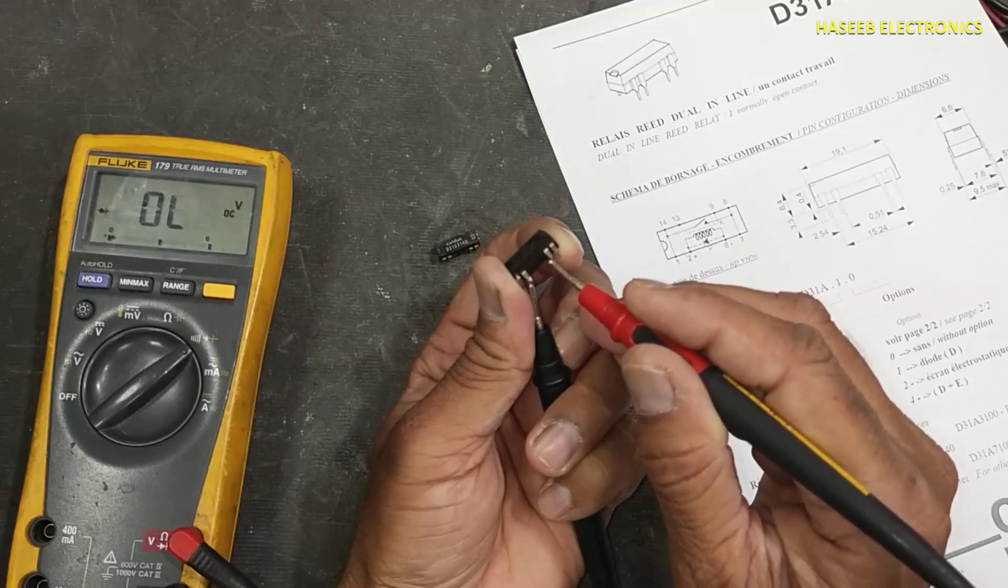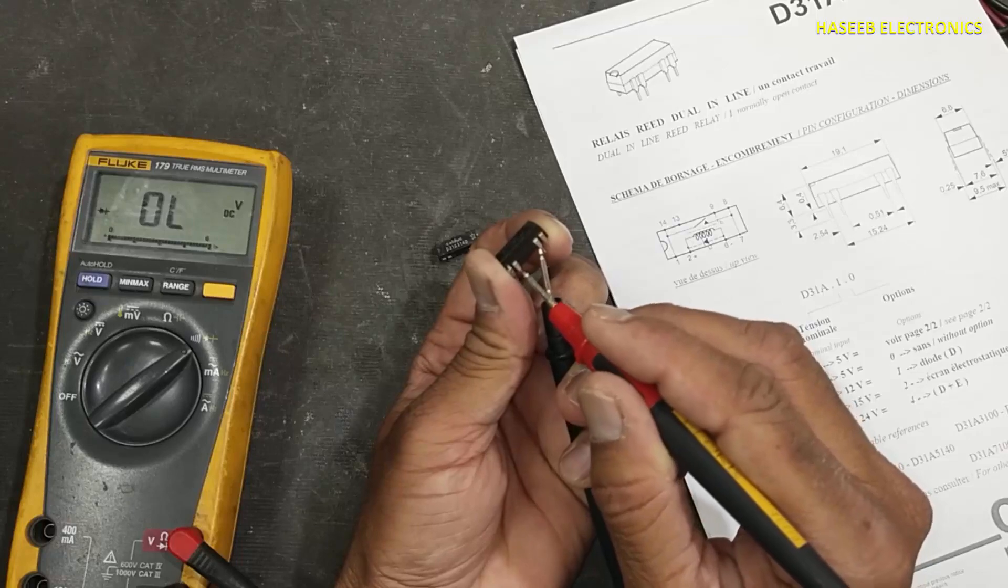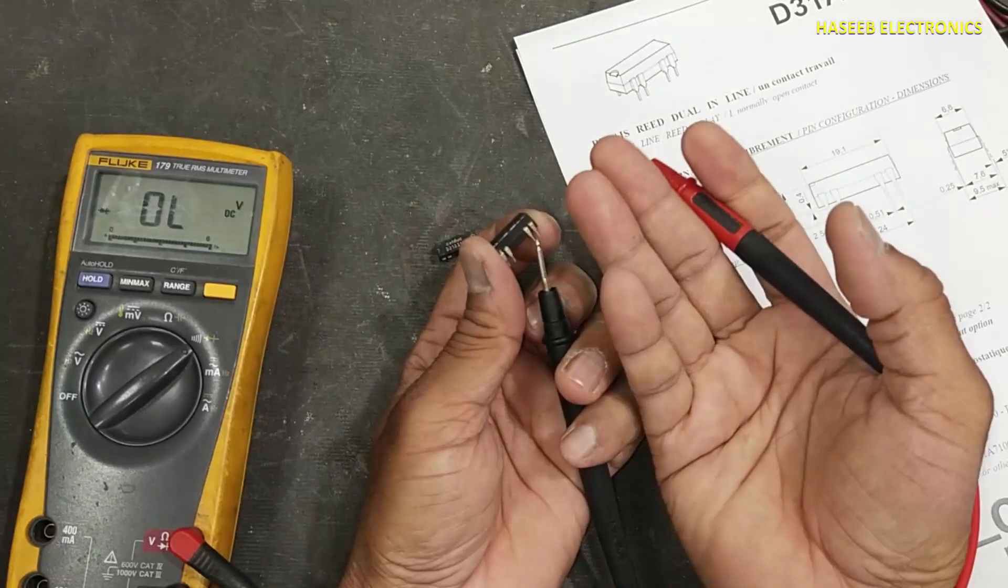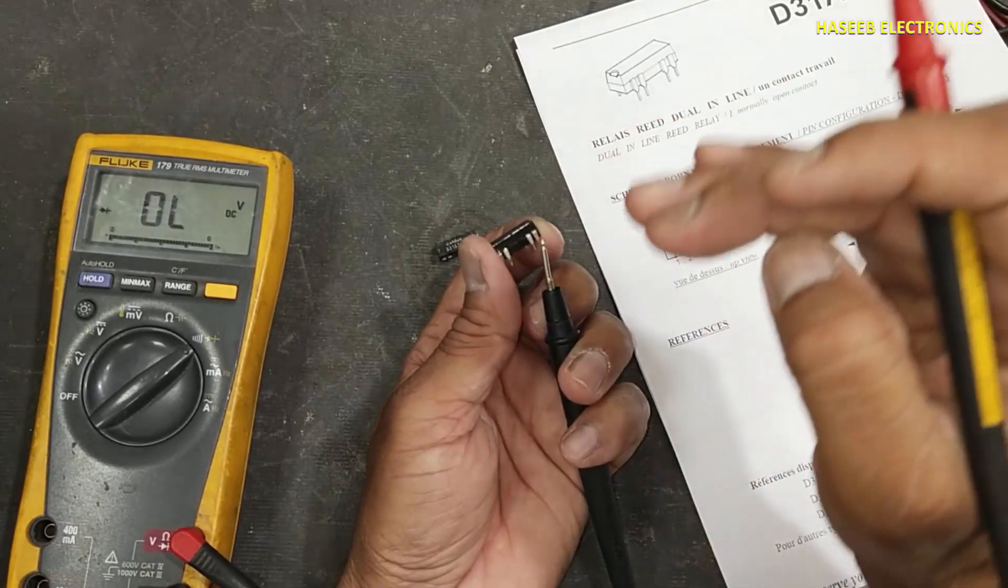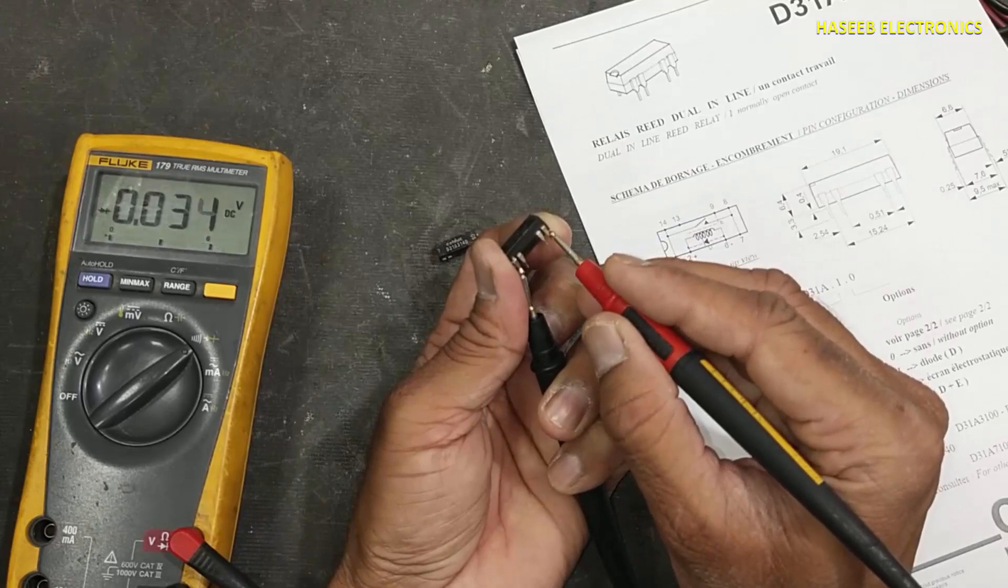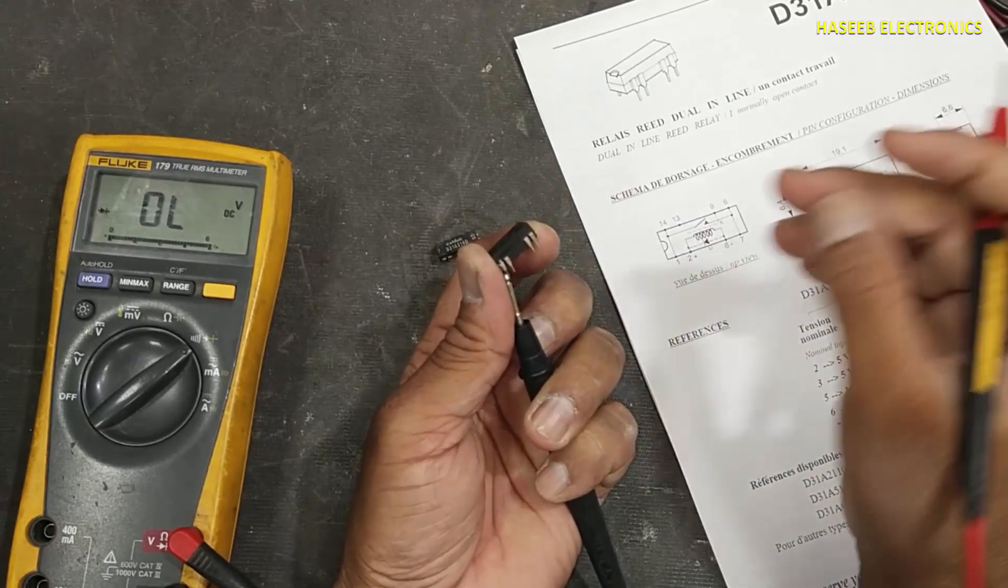Pin number 2 and 6. Reverse the leads on the same two pins. 0.52, 0.52. On one side it's giving high resistance, the other side low resistance. Check resistance between pin number 1 and 7. There's continuity. It must be open in this condition.